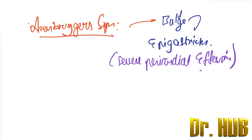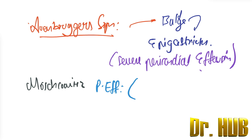The Ohnbrugger sign is bulging of the epigastrium in severe pericardial effusion. Next is the Mosch-Covid sign. This sign is seen in pericardial effusion, and the transition of the percussion from the lungs to the right heart border is abrupt. There is a transition seen on percussion.